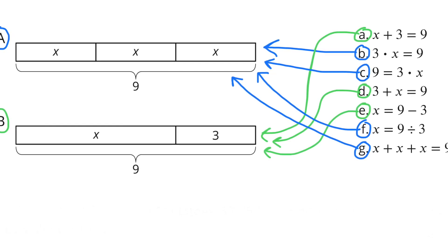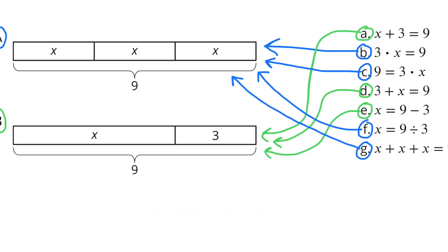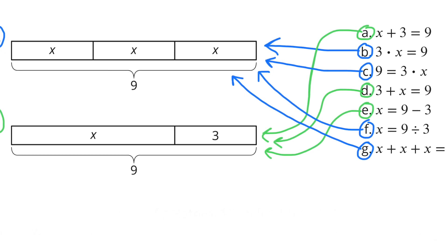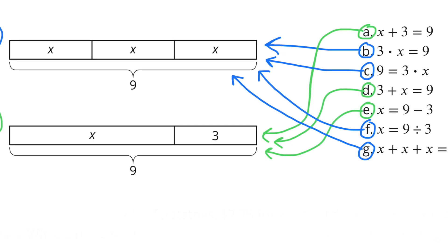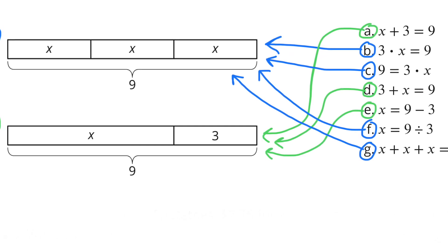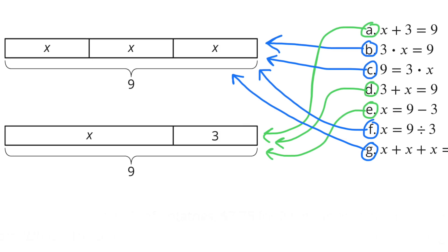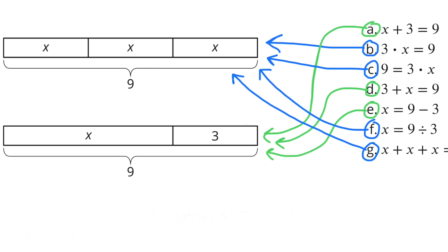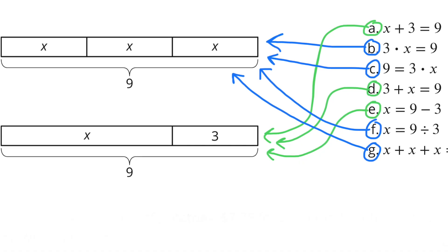E: x equals 9 minus 3 — matched with diagram B. F: x equals 9 divided by 3 — matched with diagram A. G: x plus x plus x equals 9 — matched with diagram A.